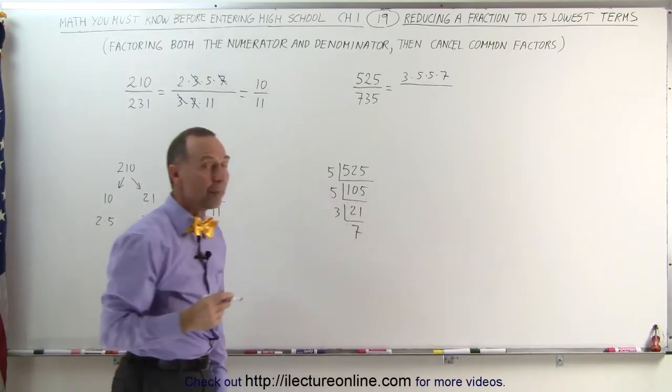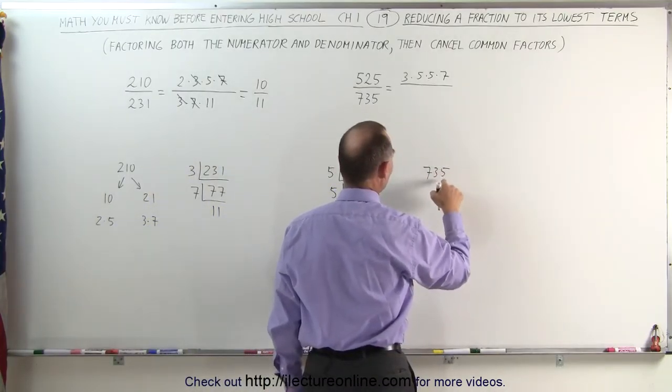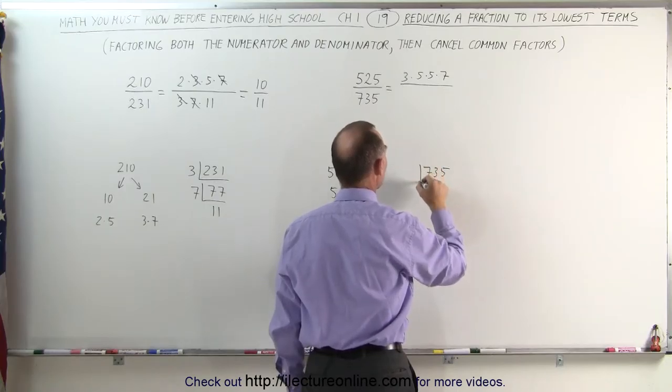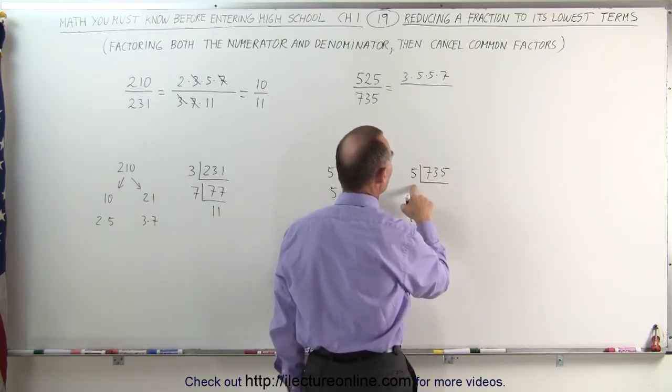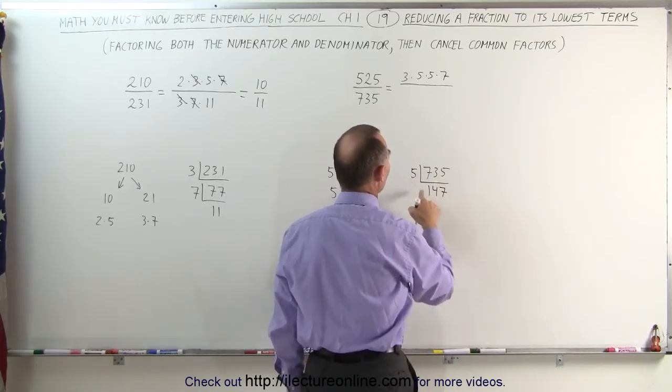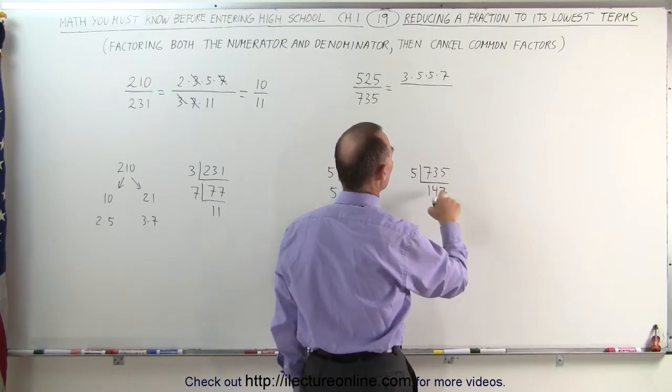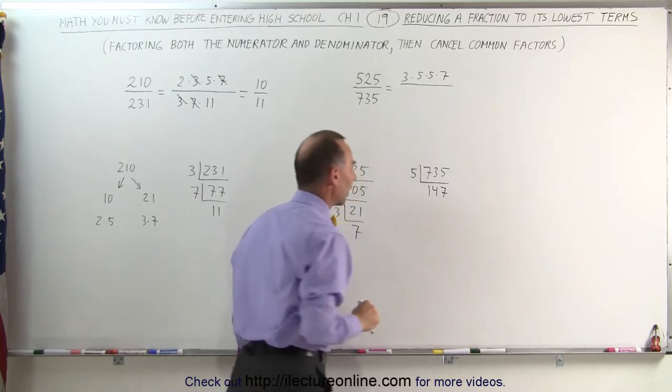Now we do the same with the denominator. We take the number 735, and again, since it's ending in a 5, we're going to divide this by 5. 5 goes into 700, that's 140 times, plus 7, that's 147 times. That is correct.